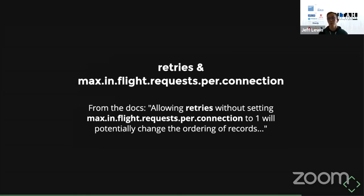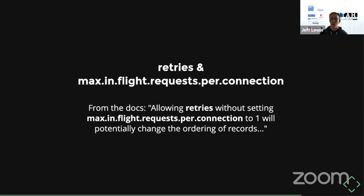This is really the most important producer config: retries and max.in.flight.requests.per.connection. Depending on how you have this set, you could end up with records going to Kafka out of order. If you set these incorrectly, you'll be scratching your head wondering why records are out of order — it's because you had retries enabled and max in-flight requests per connection set to more than one.